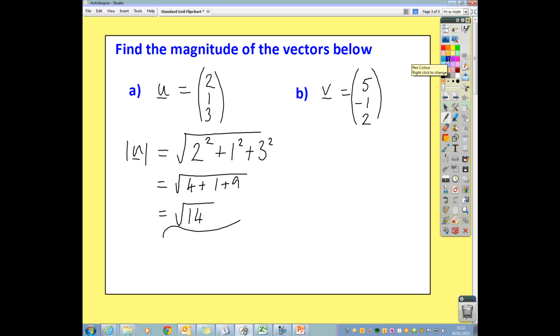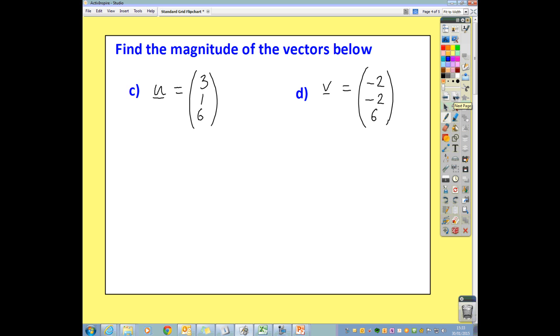For this one, taking your components, the magnitude of vector v would be the square root of, taking your components 5, negative 1, and 2, square each other and add them up, and we end up with the square root of 25, plus 1, because negative 1 squared is 1, and then we add the 4. So that's going to be the square root of 30. That's all there is to it when you're finding the magnitude. So try these two yourselves. Pause the video, check back, and see how you get on.